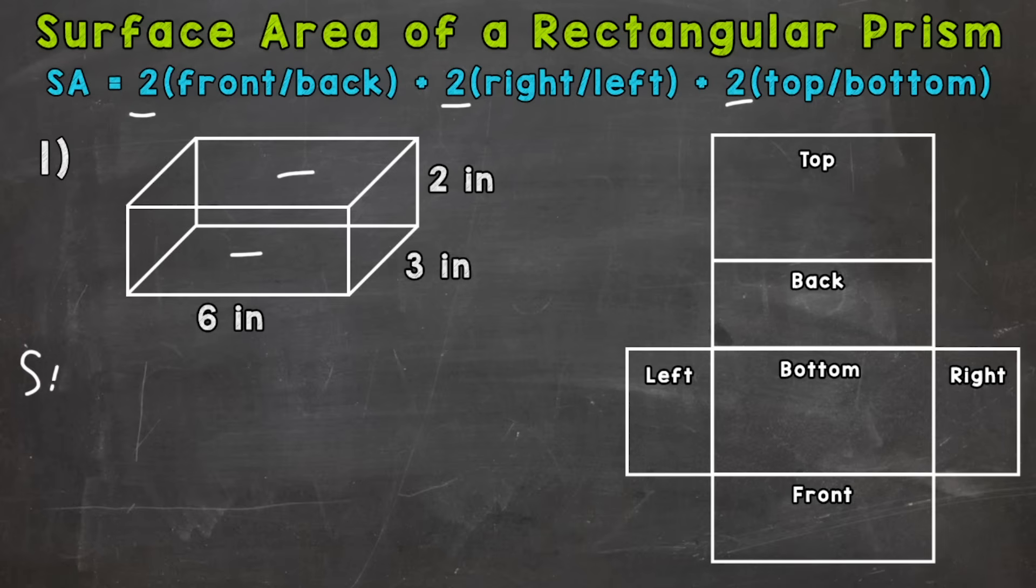And we'll start with surface area equals 2. And we need to find the area of the front or back. So let's find the area of the front where we have a 6 by 2. So we can do area equals length times width for a rectangle.